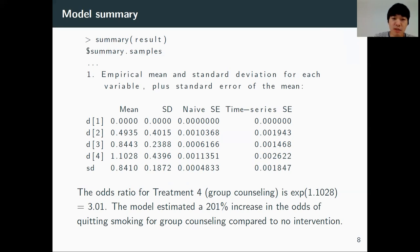Then we can summarize the results using the summary function, and this is the summary we get. The odds ratio for treatment for group counseling is 3.01. The model estimates a 200% increase in the odds of quitting smoking for group counseling compared to no intervention.